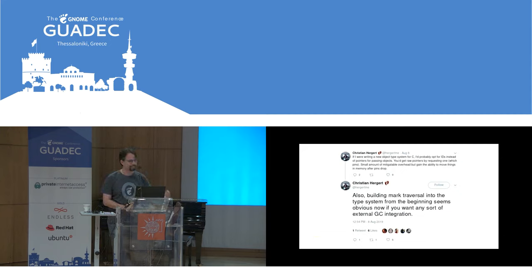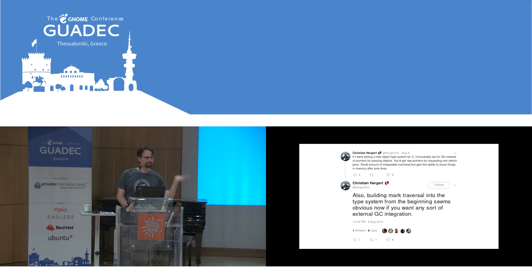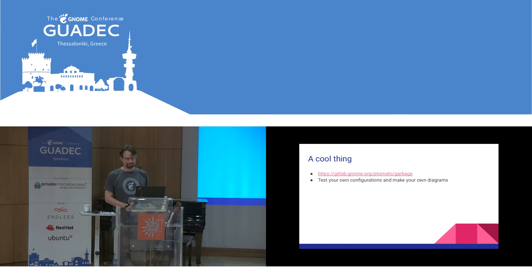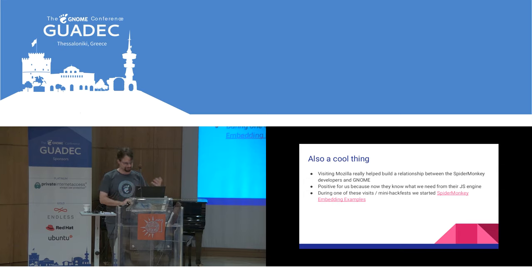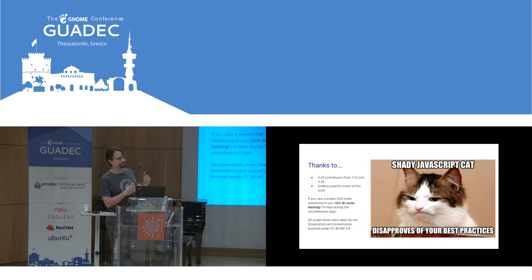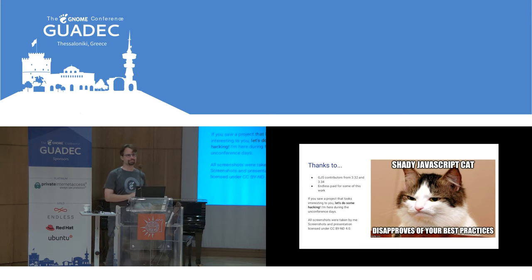I was putting this talk together and saw a tweet from Christian which seems very on-topic: please can we build marked traversal into the G-Object type system? I don't think we necessarily need that to fix it. I put libgarbage online so you can play with it and make your own diagrams. It's really cool that we have a better relationship with Mozilla now and they know what we want out of the JavaScript engine — a bunch of cool things have come out of that. Thank you to everybody who contributed to GJS in GNOME 3.32 and 3.34, thank you to Endless for paying for some of this work. If you want to hack on something, I'm going to be here — let's talk about it.